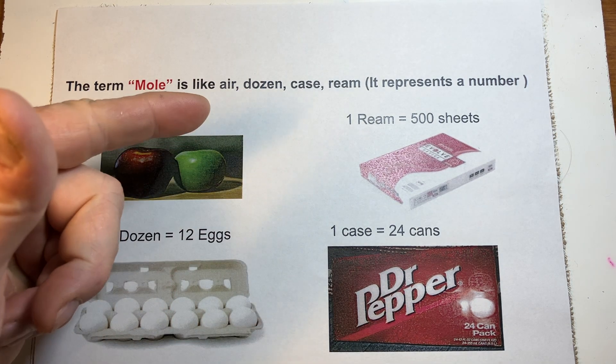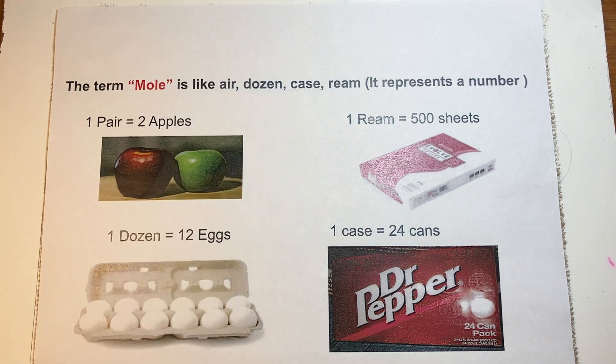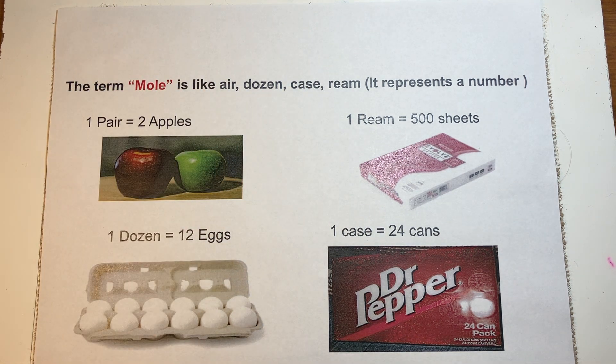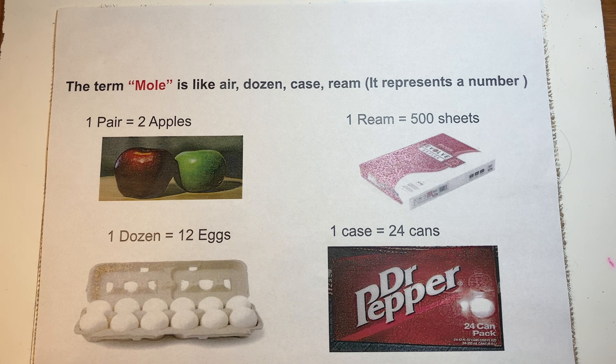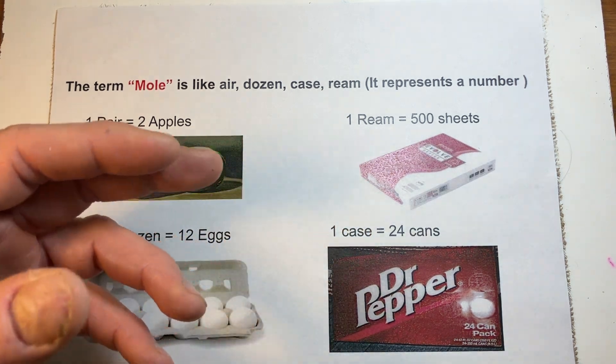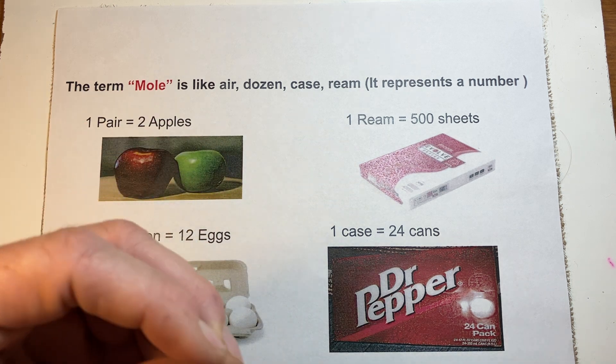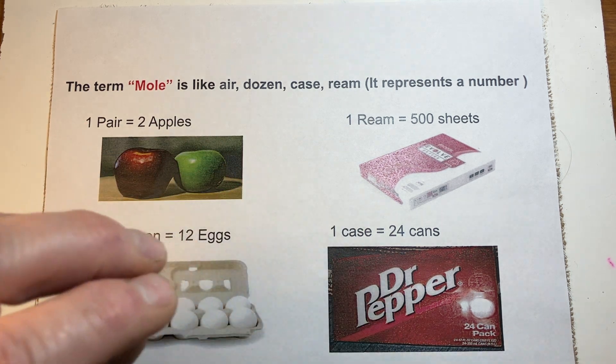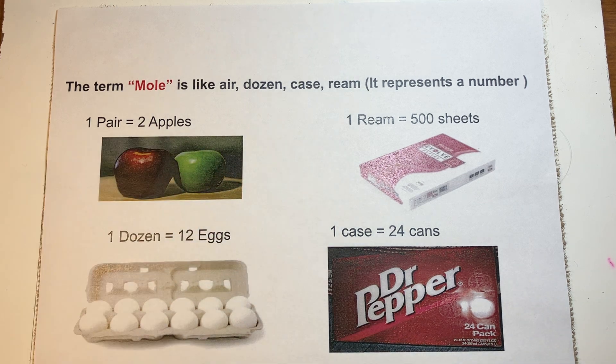So, like, a pair is two and a dozen is twelve cases. I guess, twenty-four and a ream is five hundred. We can represent a mole in chemistry, not in biology, the thing that goes on the ground. But a mole is a big number.